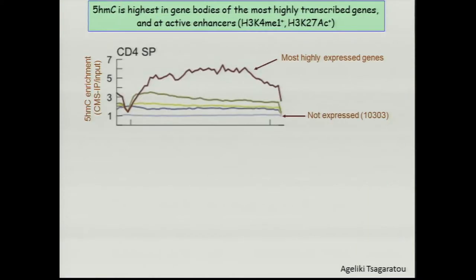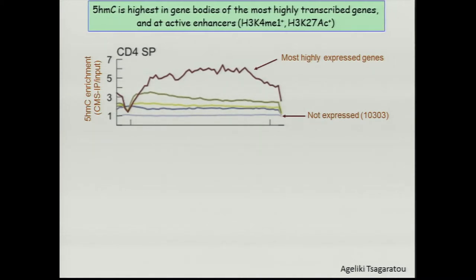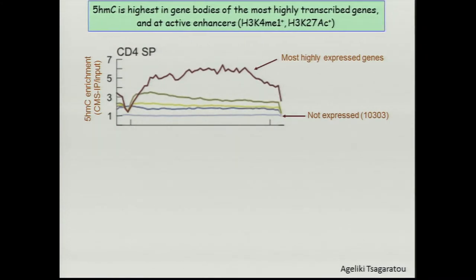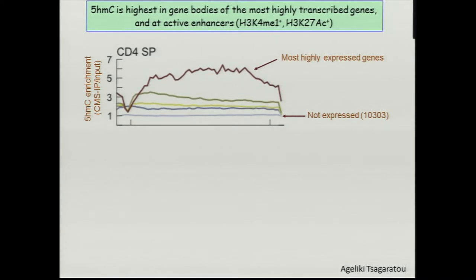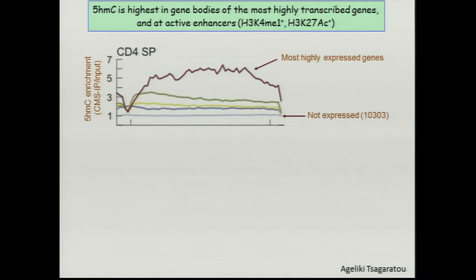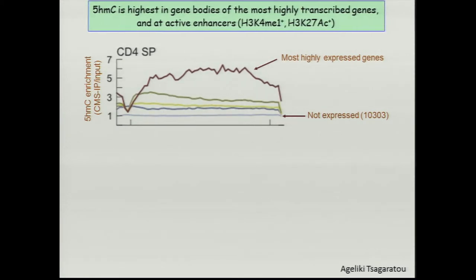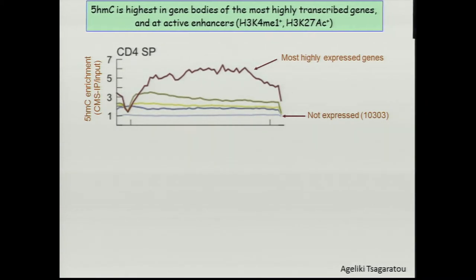So where is 5-HMC in the genome? It's highest in gene bodies of the most highly transcribed genes. The top quartile — the top 25 percent of most highly expressed genes — are highly enriched for 5-HMC. Unexpressed genes are really not enriched for 5-HMC in this standard DNA affinity enrichment method, and the lowest expressed genes are only slightly enriched.